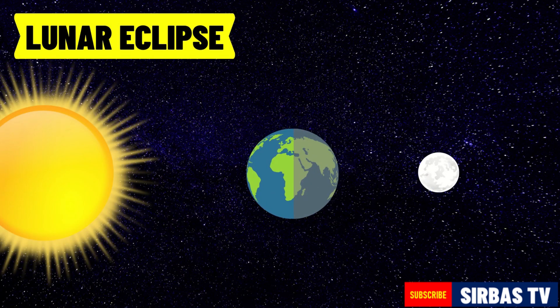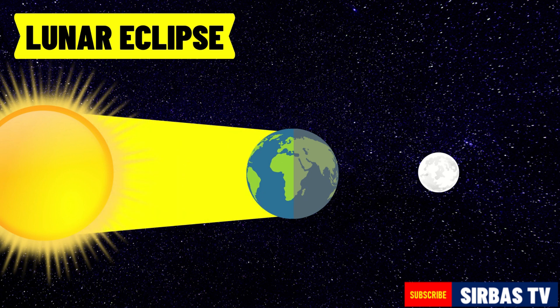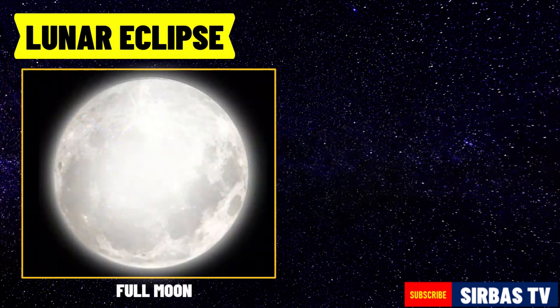During a lunar eclipse, the earth is positioned between the sun and the moon. The earth blocks the light coming from the sun to the moon. In this case, the earth's shadow falls on the moon. A lunar eclipse occurs during the full moon and it can be observed during night time.